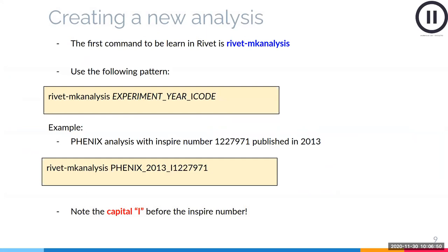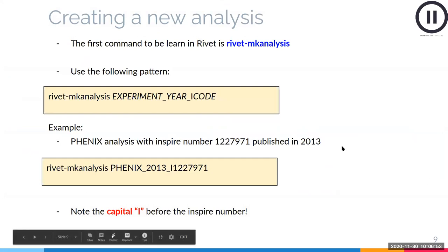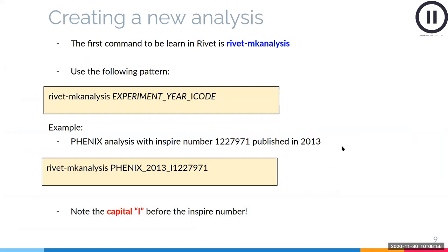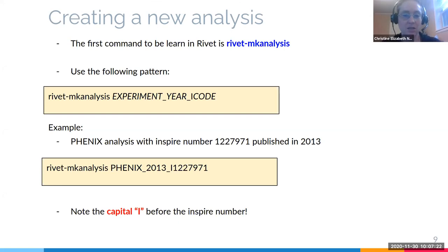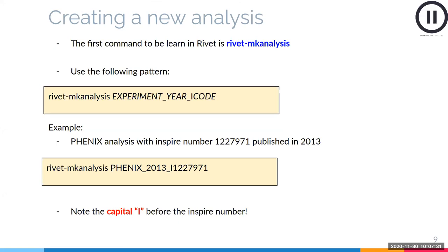Tomash asks about running 'rivet-mkanalysis': it says it cannot find data on HEPdata. This is expected if your analysis is not in HEPdata — you ignore that error on slide 9 because you already know your analysis is not there. Then on slide 10, you deal with getting data from the sandbox. Tomash submitted to HEPdata but it's not there yet — he should go to the sandbox, download the YODA file, and follow slide 10 instructions.